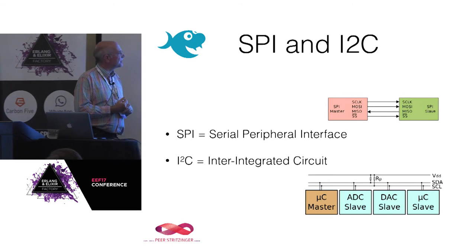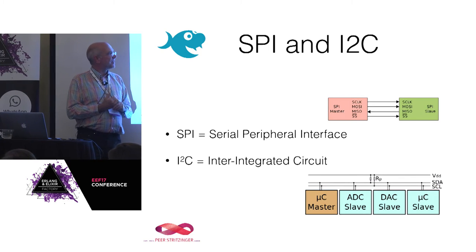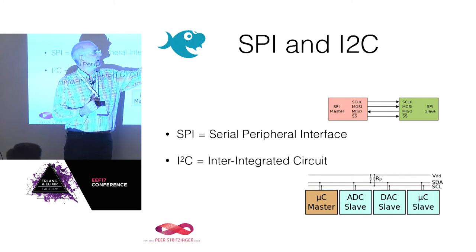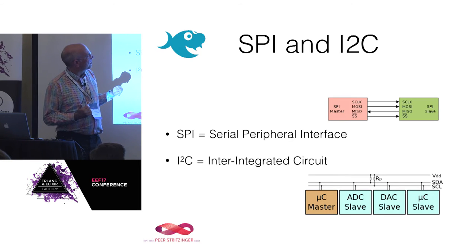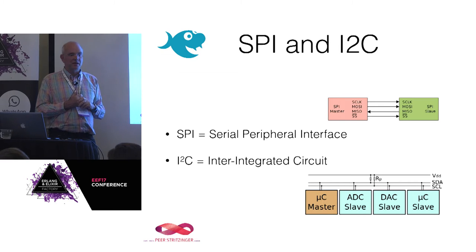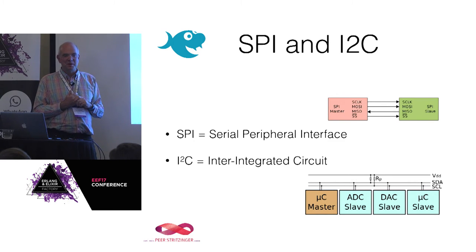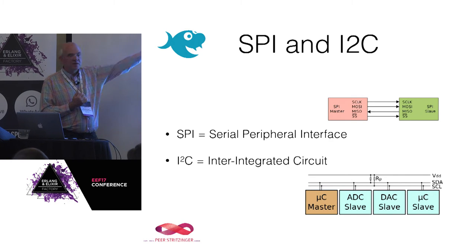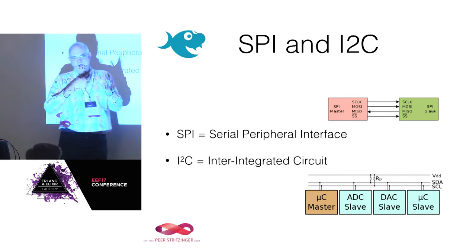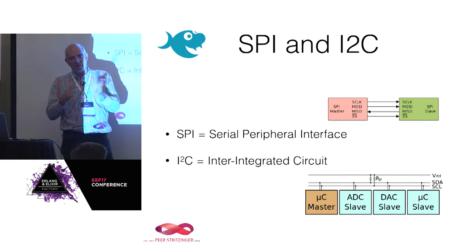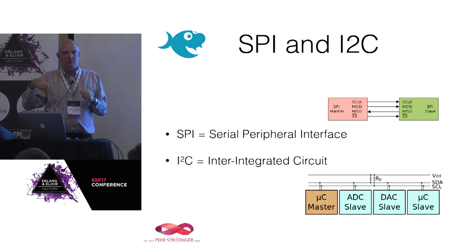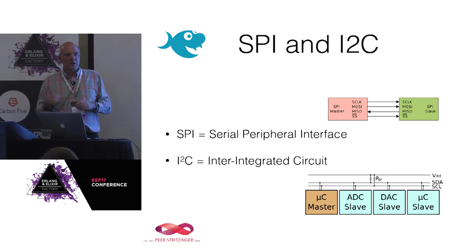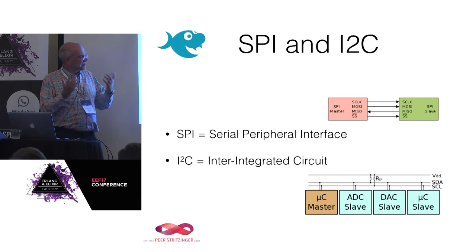SPI stands for Serial Peripheral Interface — it's very simple. You have a clock line, a data line going out, and a data line going in, called MOSI and MISO — Master Out Slave In, Master In Slave Out. You wiggle the clock and put the data synchronous to the clock on the lines. You can also use a GPIO line as a chip select to tell a chip 'I'm talking to you now, please listen' — only if that line is on does it listen, so you can have multiple chips on the same lines. I2C is very similar but it's a bus that doesn't need chip selects because it uses an 8-bit address — you talk to a device by sending the address, then the data, and get a response.